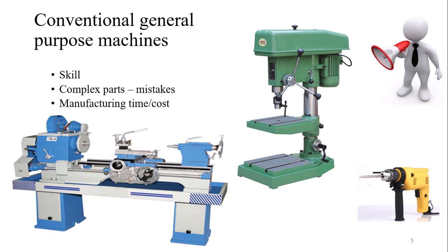As you have seen in the images, this is the drilling machine and this is your lathe machine. So what are the problems associated with these conventional machines? First of all, it requires skill. A person who is not skilled has to learn from different people in the industry before they can work on it. Even then, you cannot create complex parts — it takes a lot of time. If you can make it, there might be mistakes. Even if you are skilled enough to complete a complex part, it will take days. That's why we are moving from general purpose machining to NC or CNC machines.